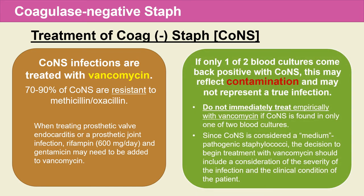An important point about treating CoNS infections: if you get one out of two blood cultures that come back with coagulase-negative staph, this may reflect contamination and may not represent a true infection. You need to stop and ask yourself whether this infection warrants starting vancomycin or not. CoNS is considered a medium pathogenic staph, so you need to look at the patient and consider the severity of infection and clinical condition before deciding whether to start vancomycin.